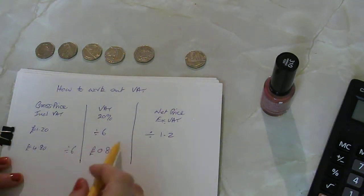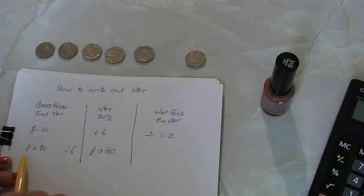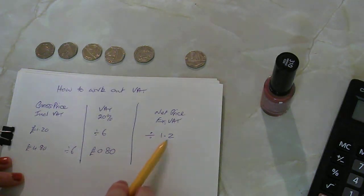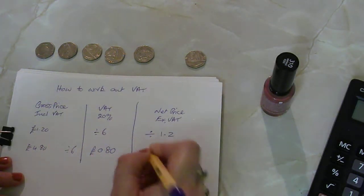OK, if we divided £4.80 divided by 1.2, that should give us £4.